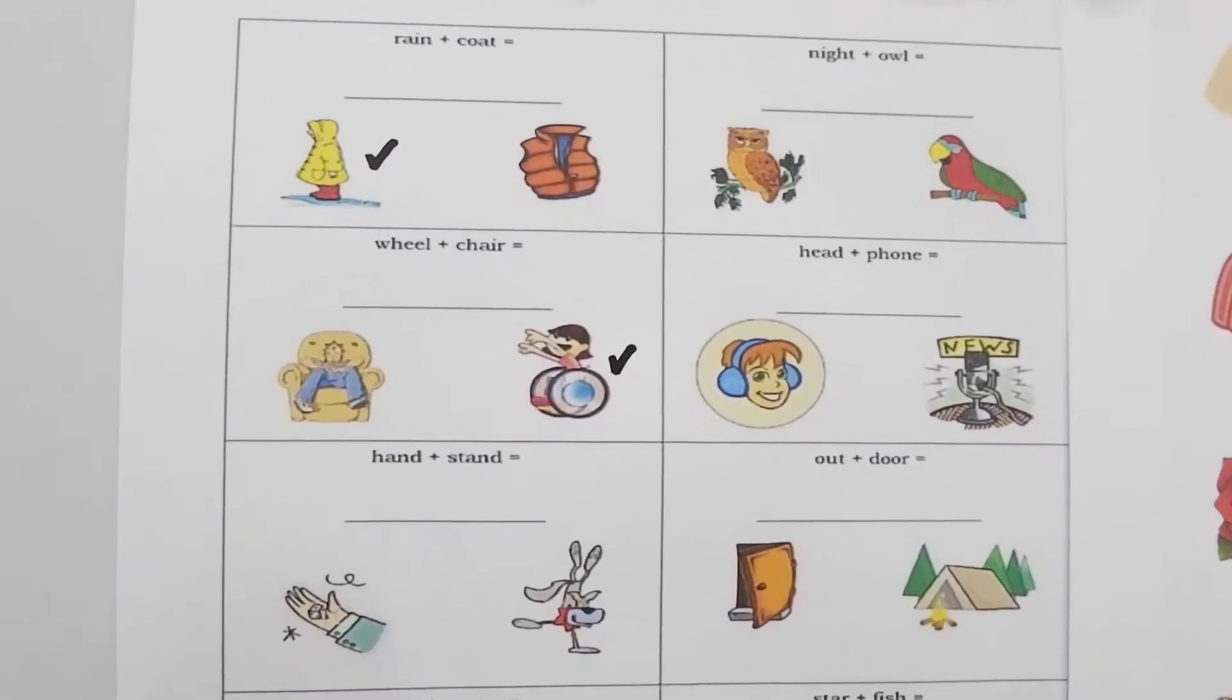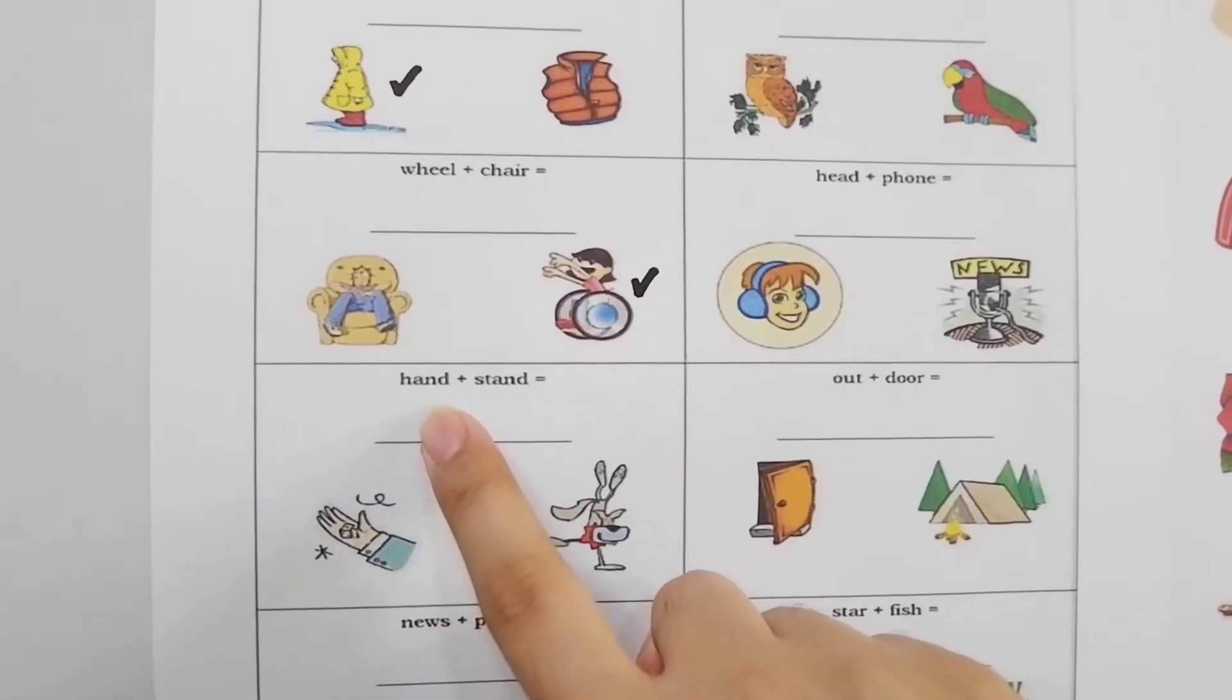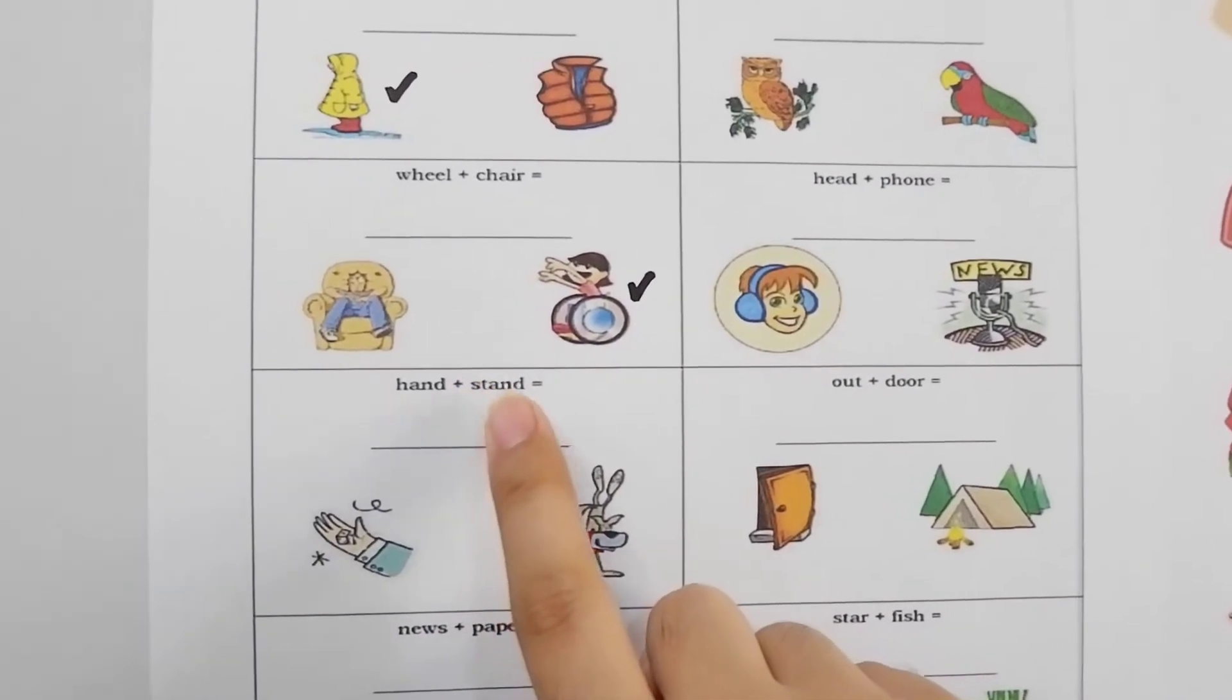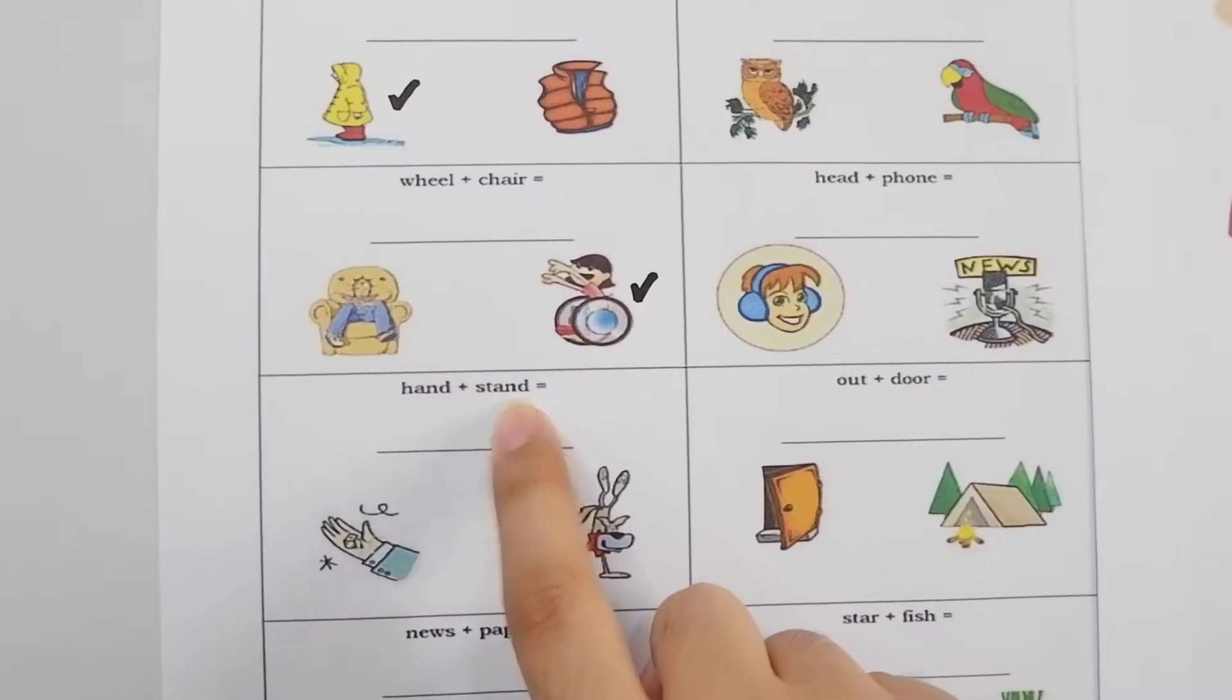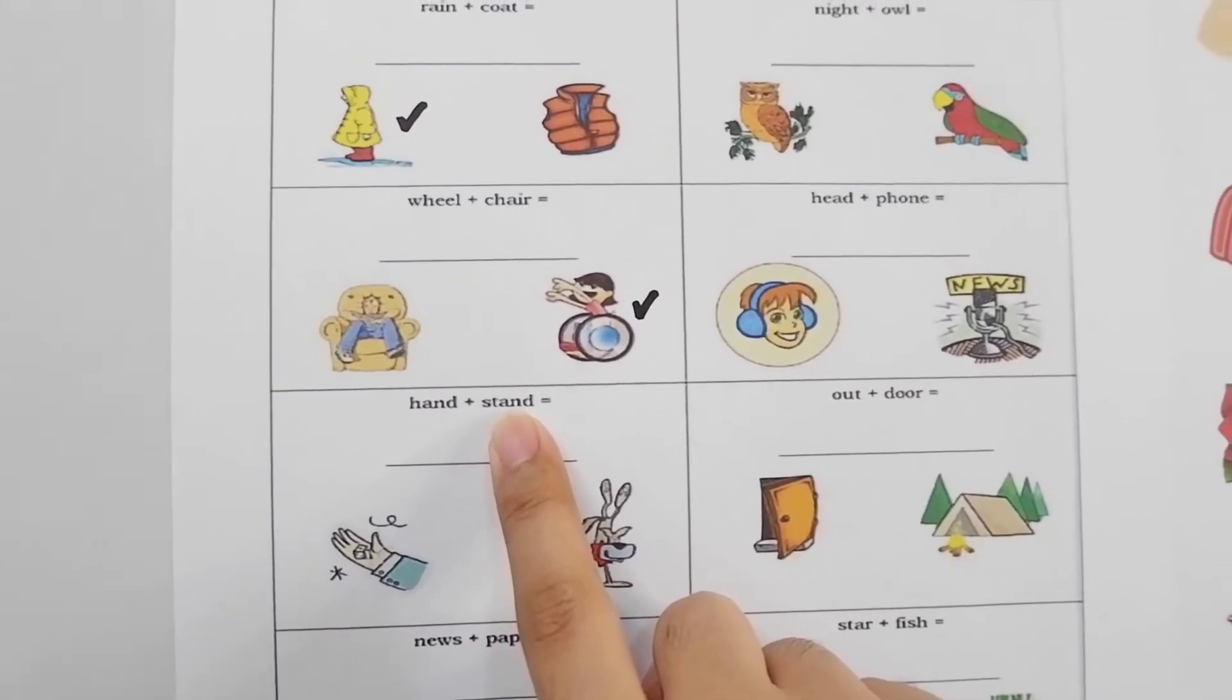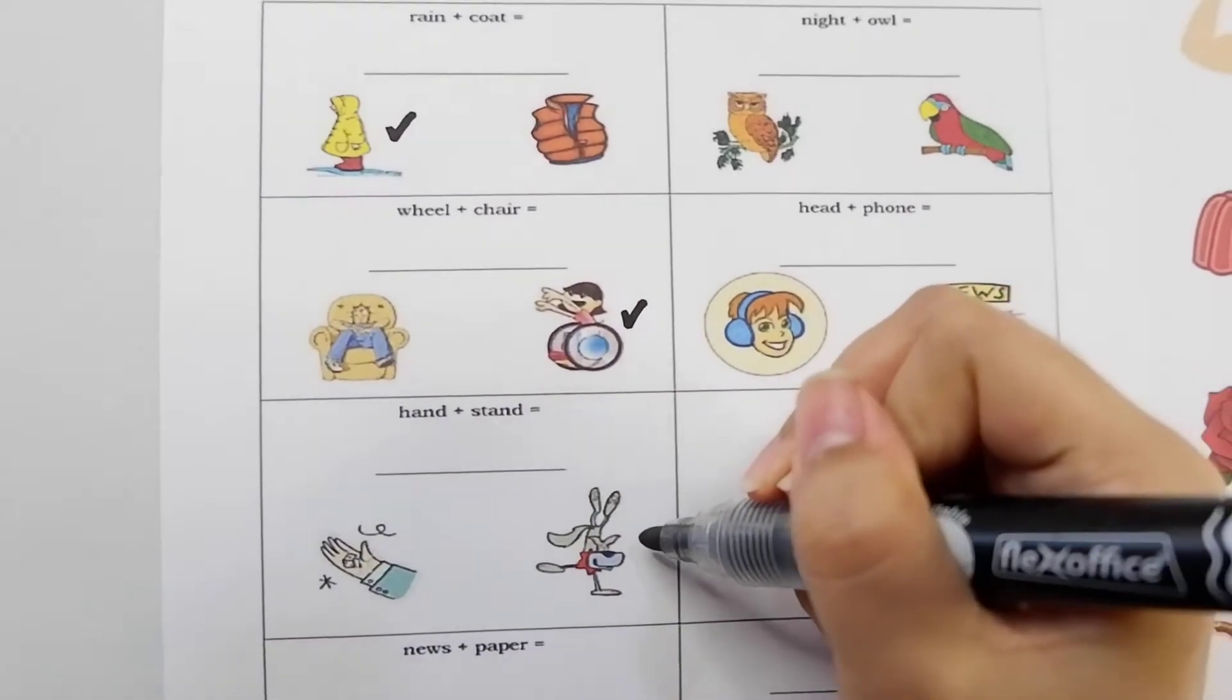Let's learn some more. The next example is hand plus stand. They are two different words but when you put them together they form a new word and it's handstand. Like this.